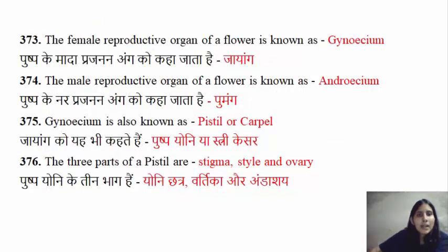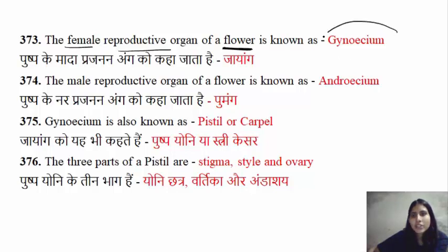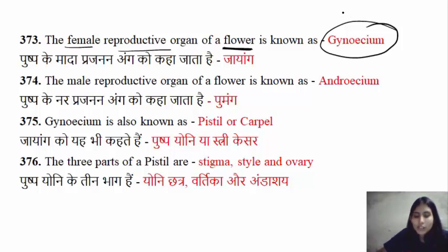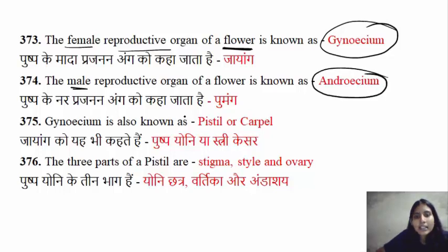Now let's talk about some questions about flowers. What is the female reproductive organ? Gynoecium is the female reproductive organ. Similarly, the male reproductive part of the flower is called androecium. Gynoecium is also known as pistil or carpel.